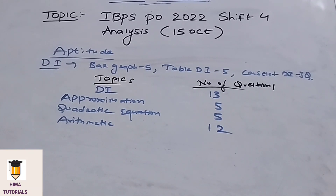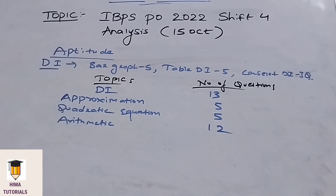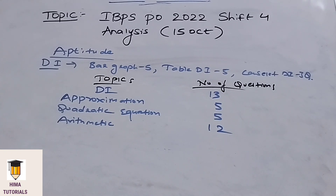Coming to the aptitude section, the overall section is easy to moderate. The topics and number of questions asked: data interpretation — 13 questions total, comprising bar graph — 5 questions, table DI — 5 questions, and caselet DI — 3 questions; approximation — 5 questions; quadratic equations — 5 questions; and arithmetic — 12 questions. I hope it is clear. That is about the aptitude section.